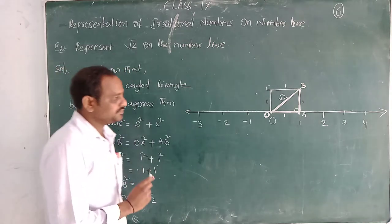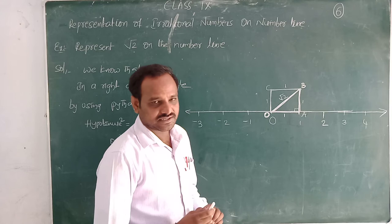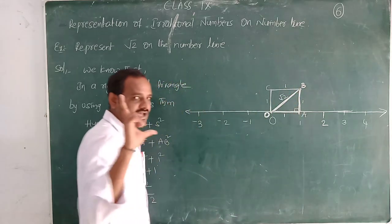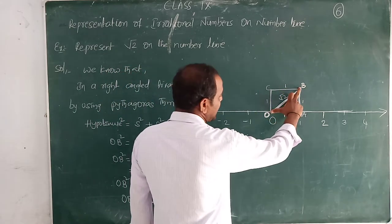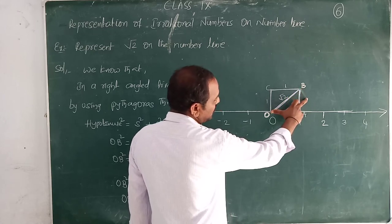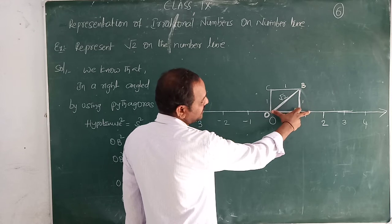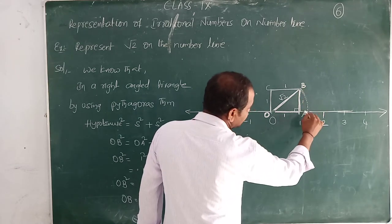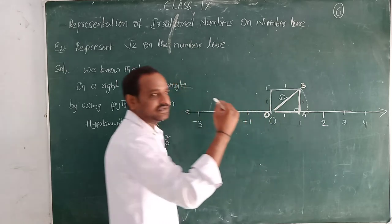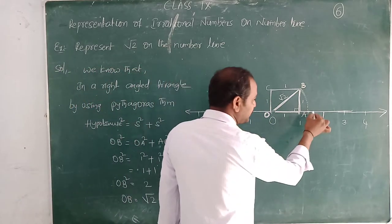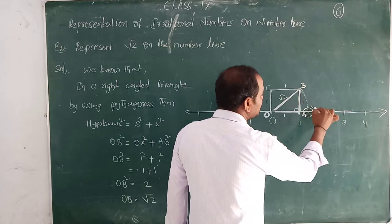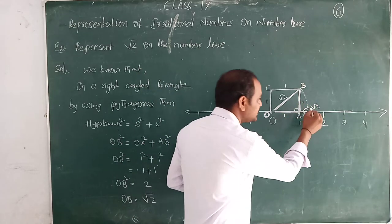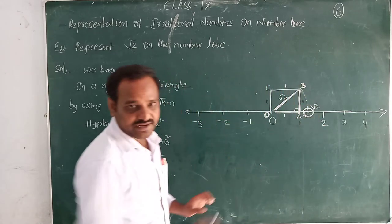Did you understand? Now, by using a compass with the radius of this hypotenuse OB, you can draw an arc from O on the number line. When you draw by using the compass, it intersects and touches the number line at a particular place, which is root 2. That is the representation of root 2 on the number line.